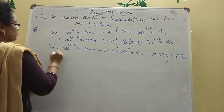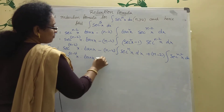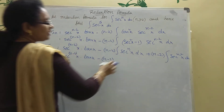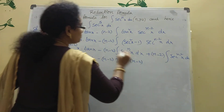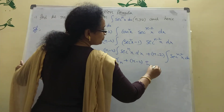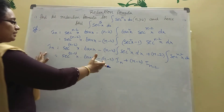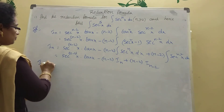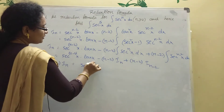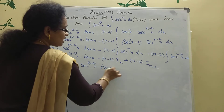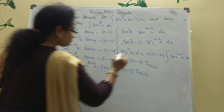Now I_n equals secant power (n minus 2) x into tan x, minus (n minus 2) times the integration of secant power n x dx, plus (n minus 2) times integration of secant power (n minus 2) x dx. Taking I_n to one side: I_n plus (n minus 2)·I_n equals secant power (n minus 2) x into tan x plus (n minus 2)·I_(n minus 2).